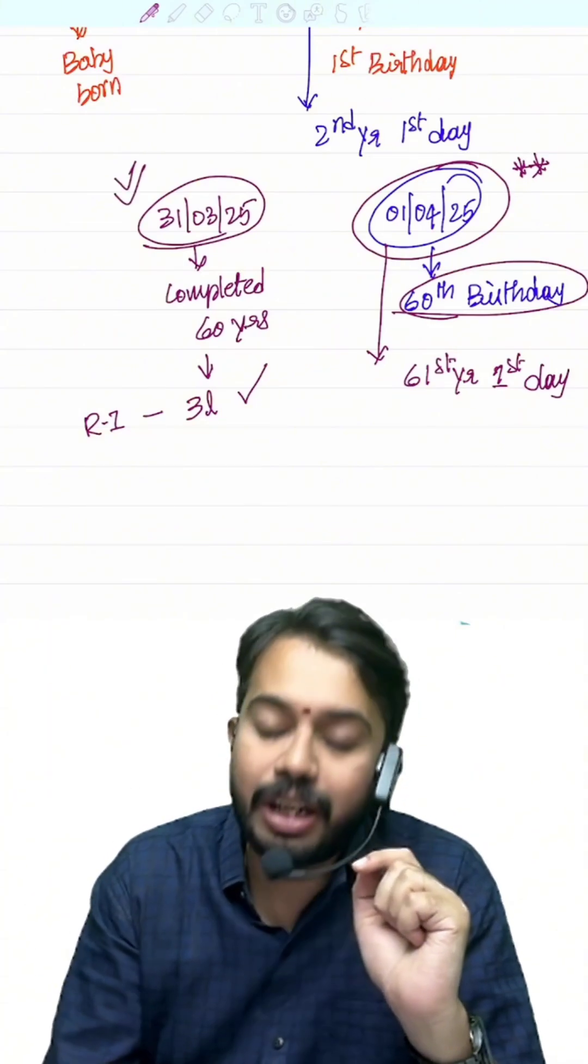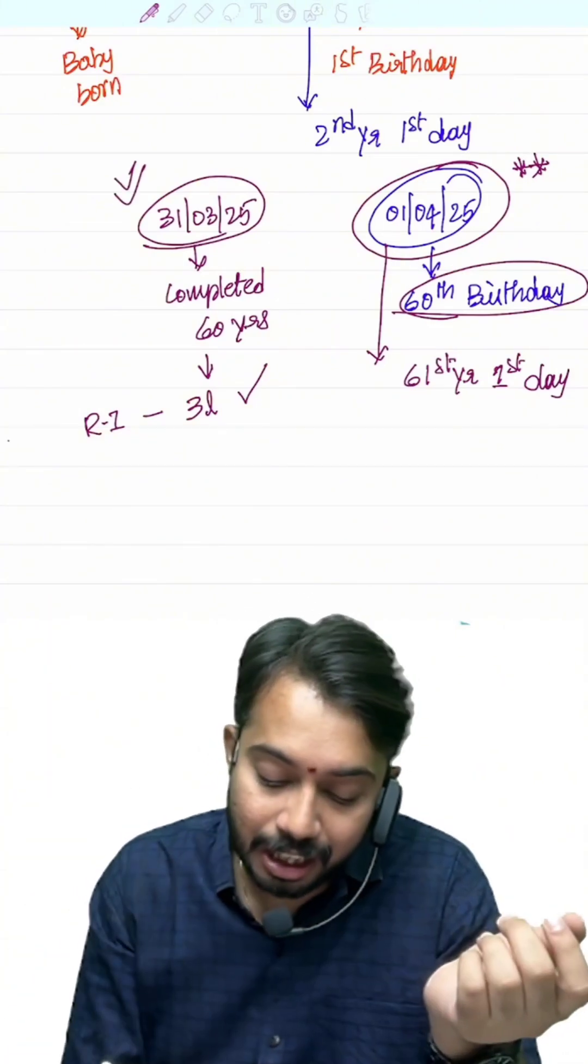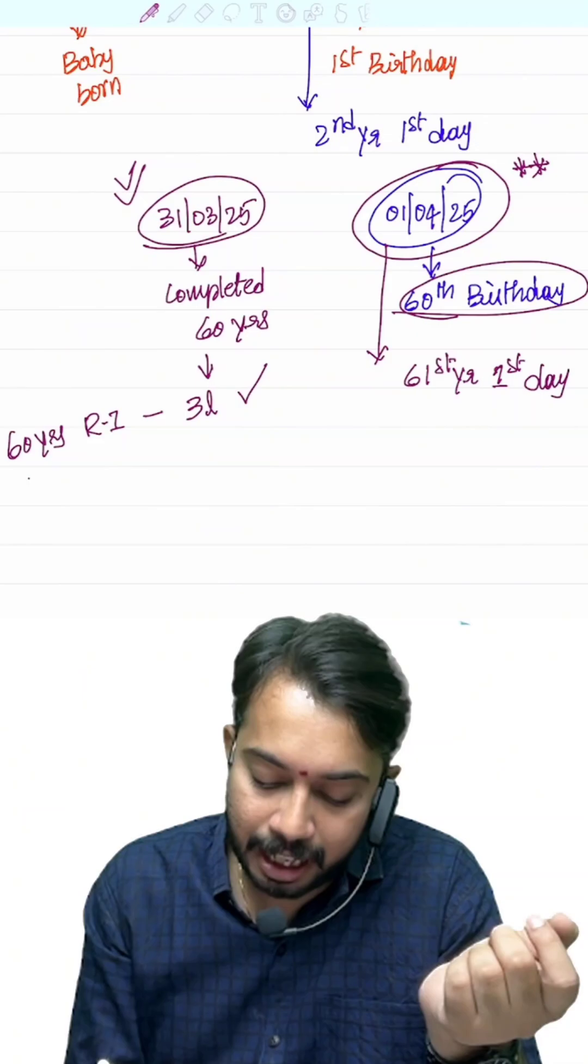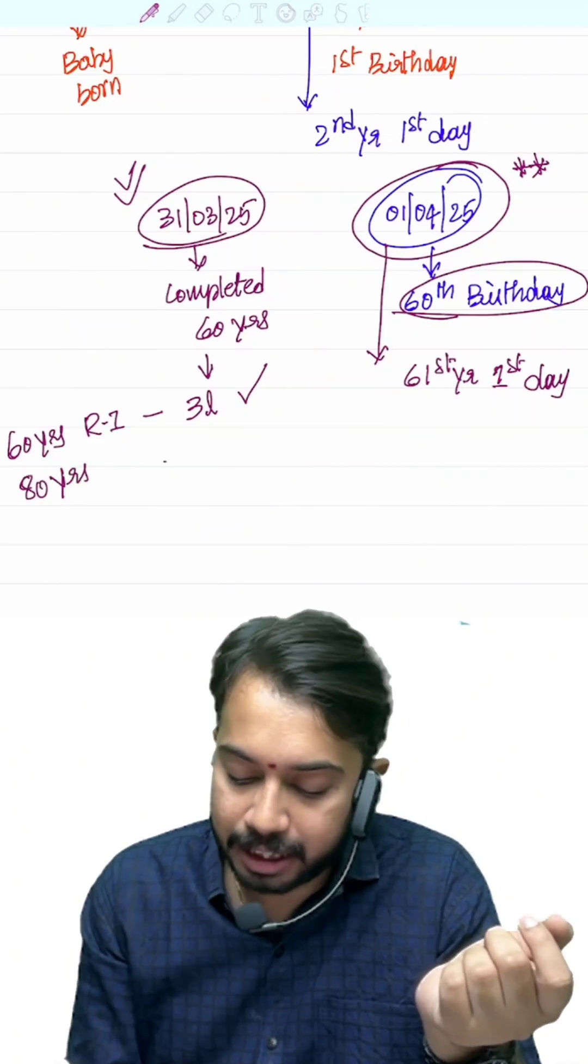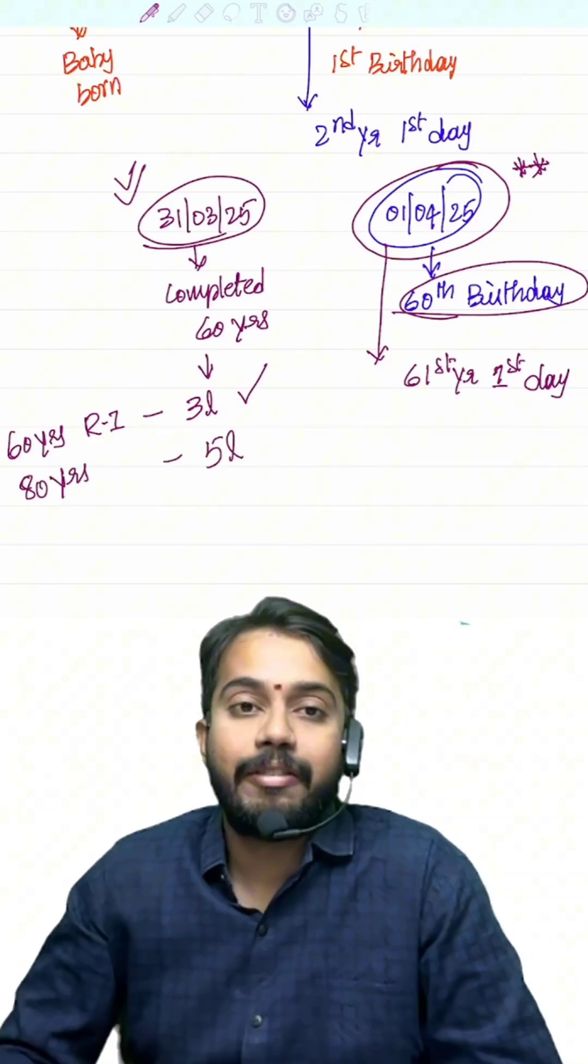So as on 31st March 2025, they are finishing 60 years or if they are finishing 80 years, they are eligible for higher basic exemption limit of 3 lakhs and 5 lakhs.